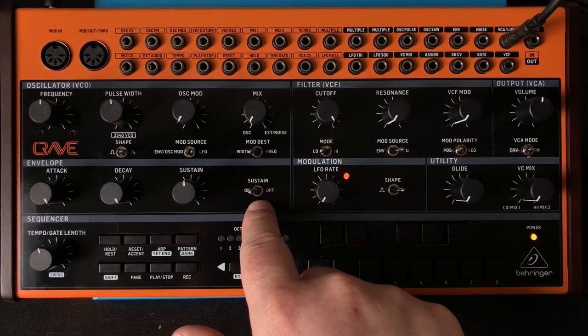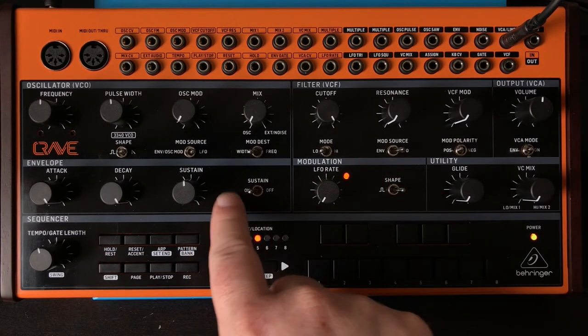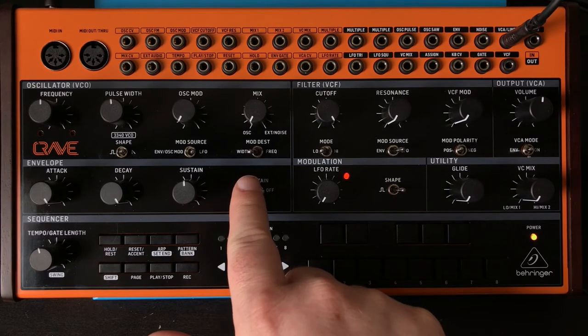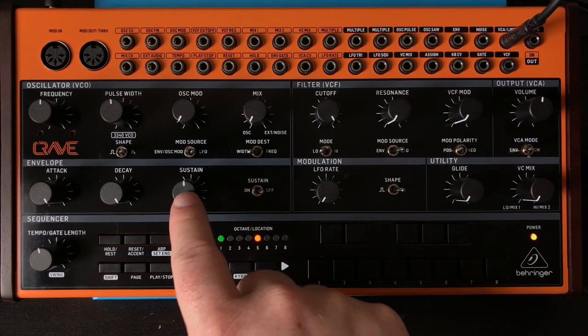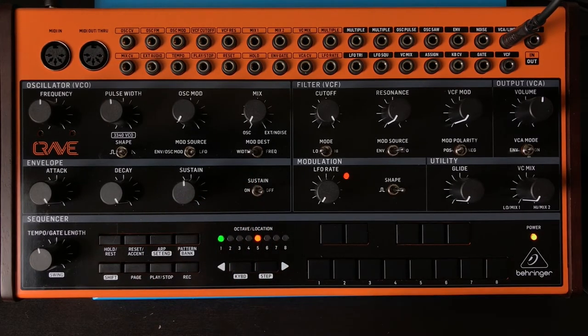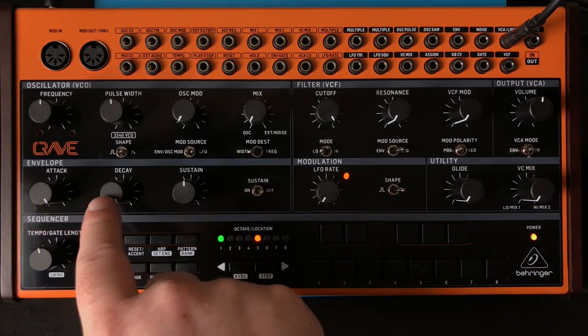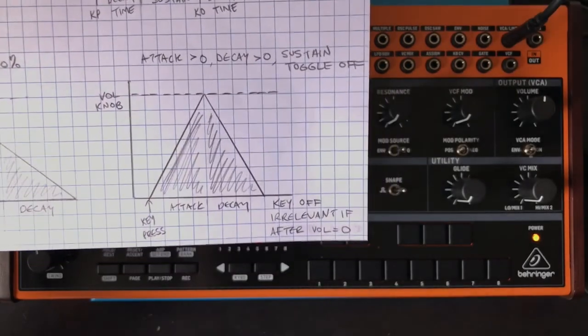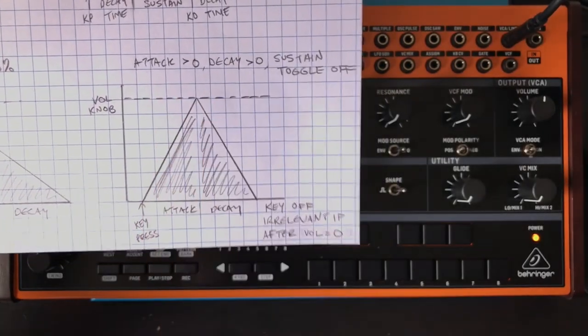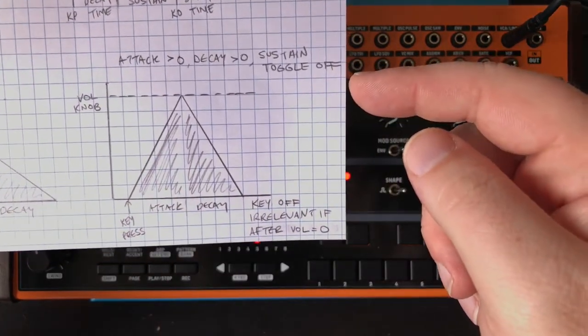Now, sustain this entire time has been toggled on. If I toggle sustain off, now this knob has no function whatsoever. And the only things that occur are the attack and the decay. That one I've drawn here. So we've set the attack greater than zero, the decay greater than zero, and the sustain toggle is off.